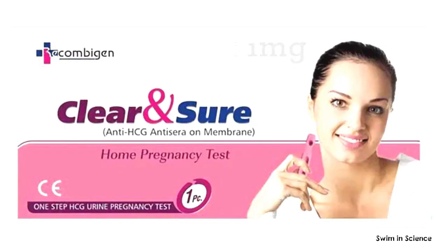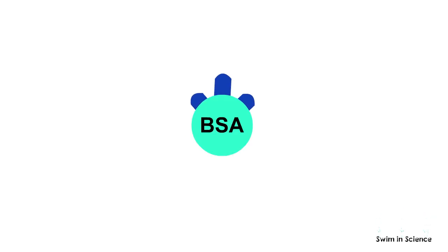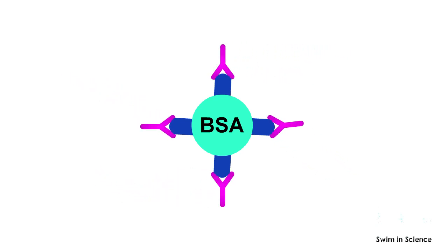A very good example is the original pregnancy test kit that utilizes anti-HCG antibodies. HCG hormone is a hapten and it has to be conjugated with carrier molecules such as BSA to get anti-HCG antibodies.